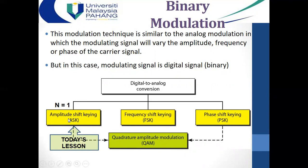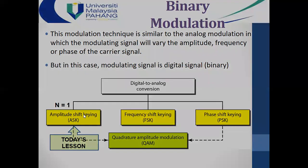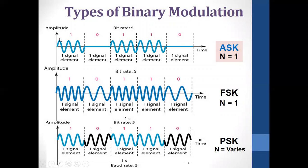ASK is amplitude shift keying; two bit levels are used — zero and one — so n equals one: one bit per symbol. Looking at the graphical representation comparing ASK, FSK, and PSK: for ASK, if the bit level is one, the carrier is captured for that bit duration. If zero, nothing is transmitted — it is off. This on-off switching is why ASK is also called on-off keying (OOK). N equals one here.